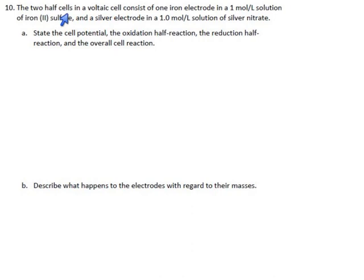Okay, what else have we got here? Two half cells in a voltaic cell consist of... Okay, so they give us iron in an iron solution, silver in a silver solution, and we have some sulfates and nitrates, which probably don't matter, but we'll put them on the list just to make sure.